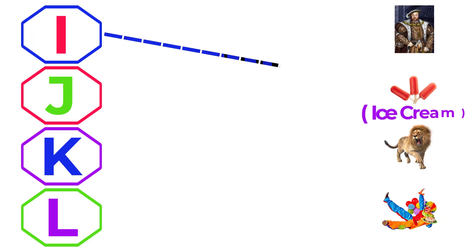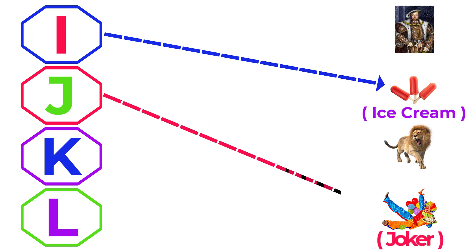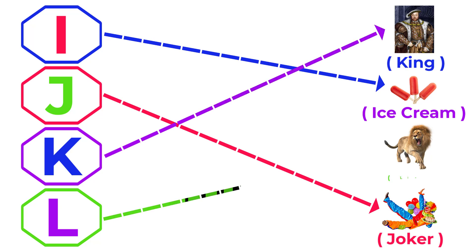I for ice cream, J for joker, K for king, L for lion.